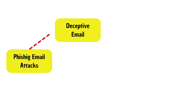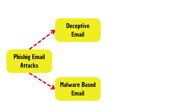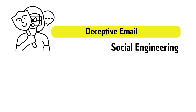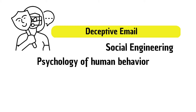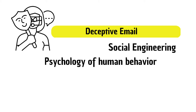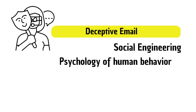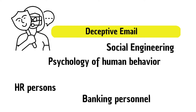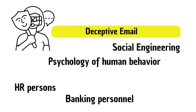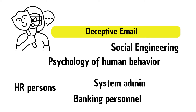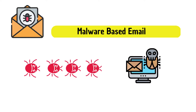In general, phishing attacks are divided into two categories: deceptive emails and malware-based emails. Deceptive phishing uses social engineering and is less technical, but leverages the psychology of human behavior. In this category, attackers pretend to be someone they're not, faking themselves as legitimate entities like HR persons, banking personnel, or system admins. The intention is to ask the victim to do something on behalf of the attacker.